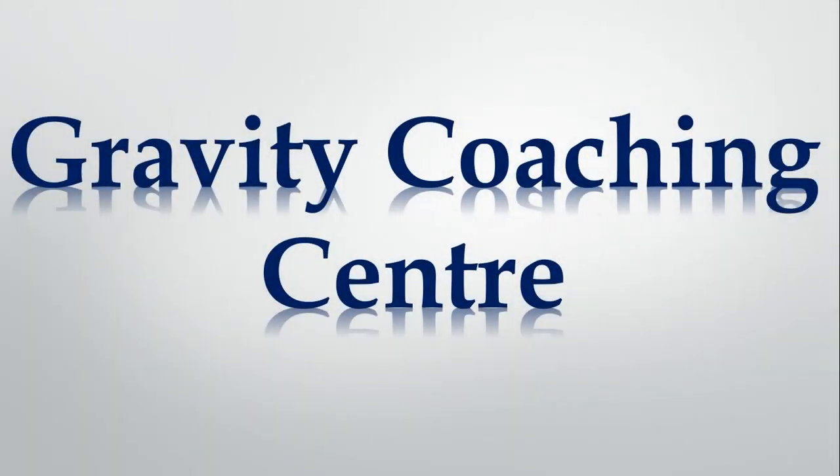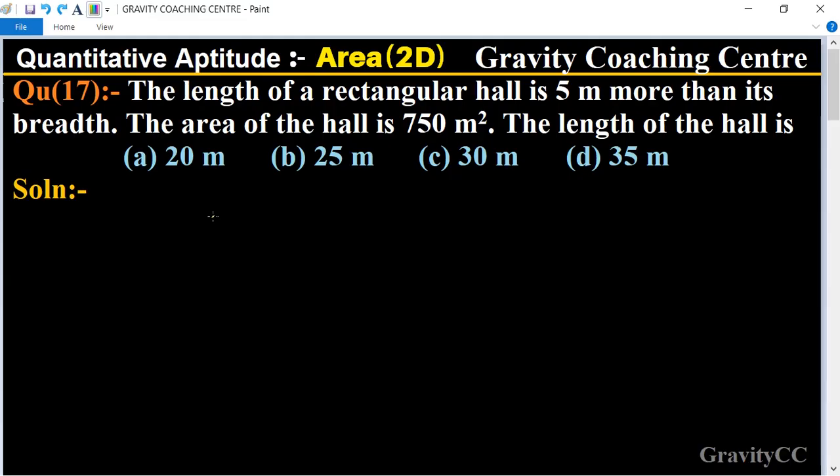Welcome to our channel, Gravity Coaching Center. Quantitative Aptitude, Chapter Area, Question Number 17: The length of a rectangular hall is 5 meters more than its breadth. The area of the hall is 750 square meters. The length of the hall is: